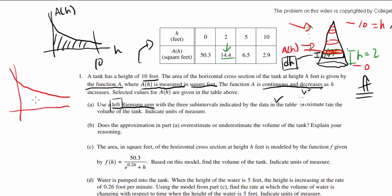What they have given us: A of h is going down. At 0, they told us the height is 50.3. At 2, they told us the height is 14.4. At 5, they told us the height is 6.5. And at 10, they told us the height is 2.9. So if we want to approximate the area of this curve using the left Riemann sum, you're going to use the left point of each of these intervals. So you got these three rectangles and you want to find the areas of these three rectangles and add them up.